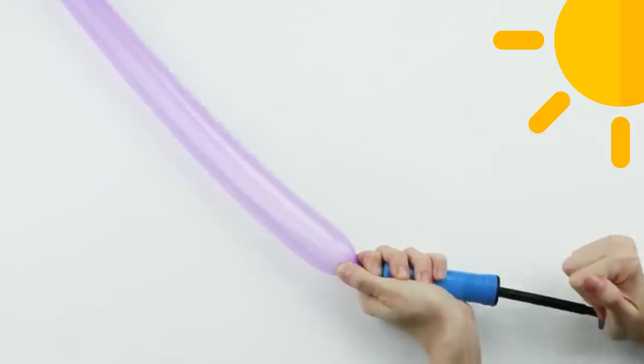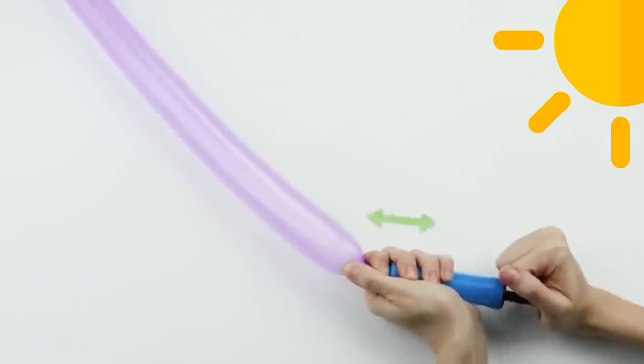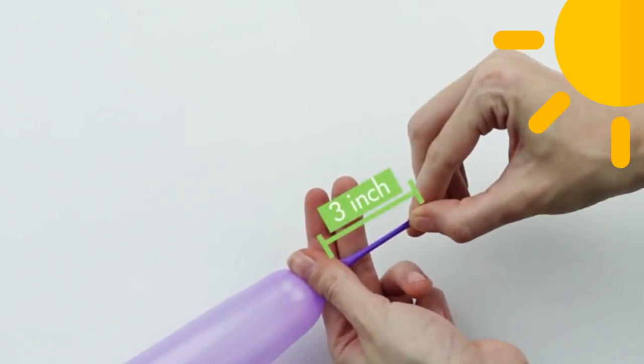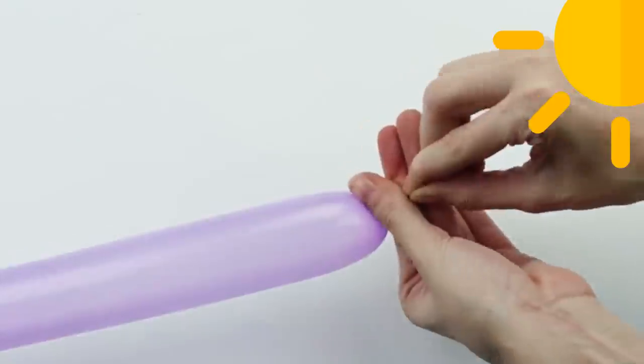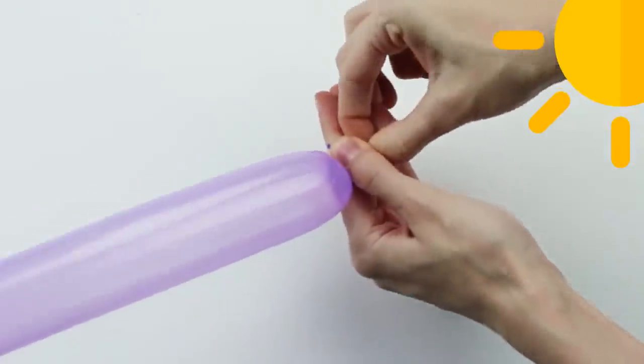Making a Balloon Dog. Inflate the balloon and leave a 3-inch tail. Just keep blowing until the air has inflated the balloon to about 3 inches from the end, then stop blowing and tie off the balloon.